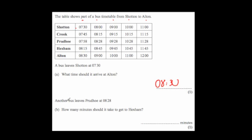Another bus leaves Prudhoe at 8:28. How many minutes does it take to get to Hexham? The bus leaves Prudhoe at 8:28 and arrives at Hexham at 8:45. We need to find how many minutes from 28 minutes past 8 to 45 minutes past 8, so we calculate 45 minus 28.